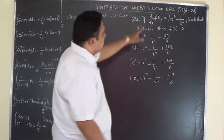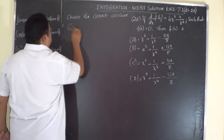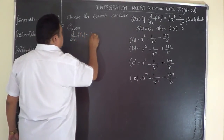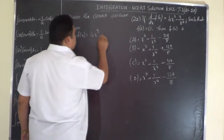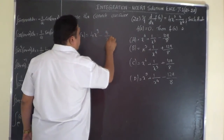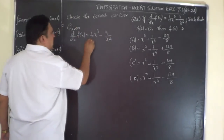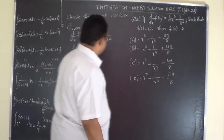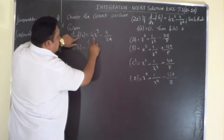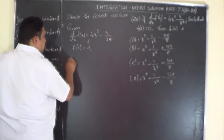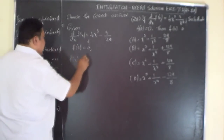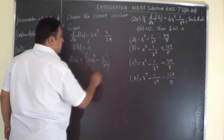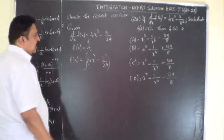Now for question 22: it is given that the differential coefficient of f(x), i.e., d/dx[f(x)] = 4x³ - 3/x⁴, and f(2) = 0. We have to find f(x). Since differentiation is the reverse process of integration, f(x) is simply the integral of 4x³ - 3/x⁴.